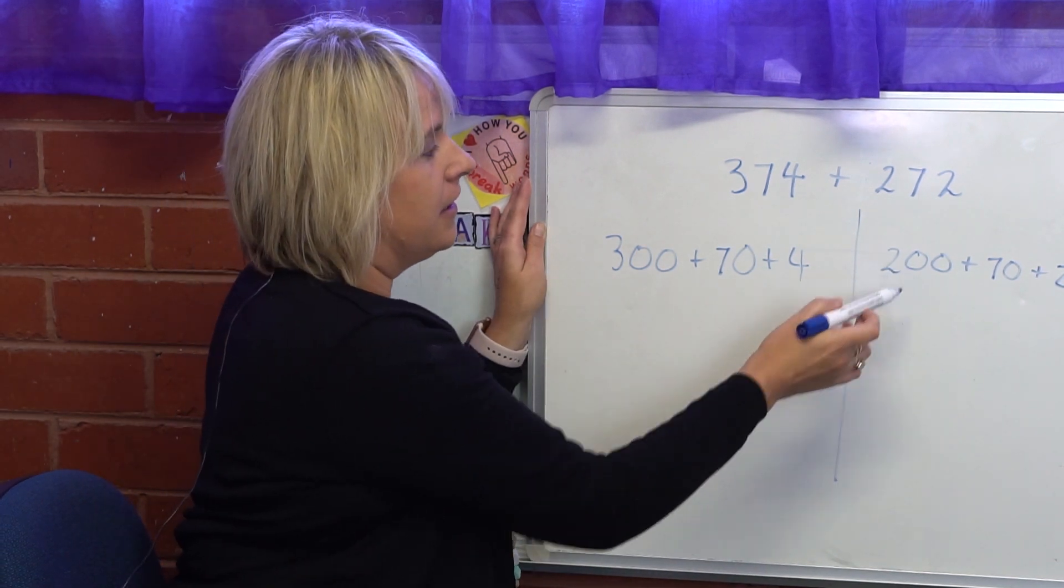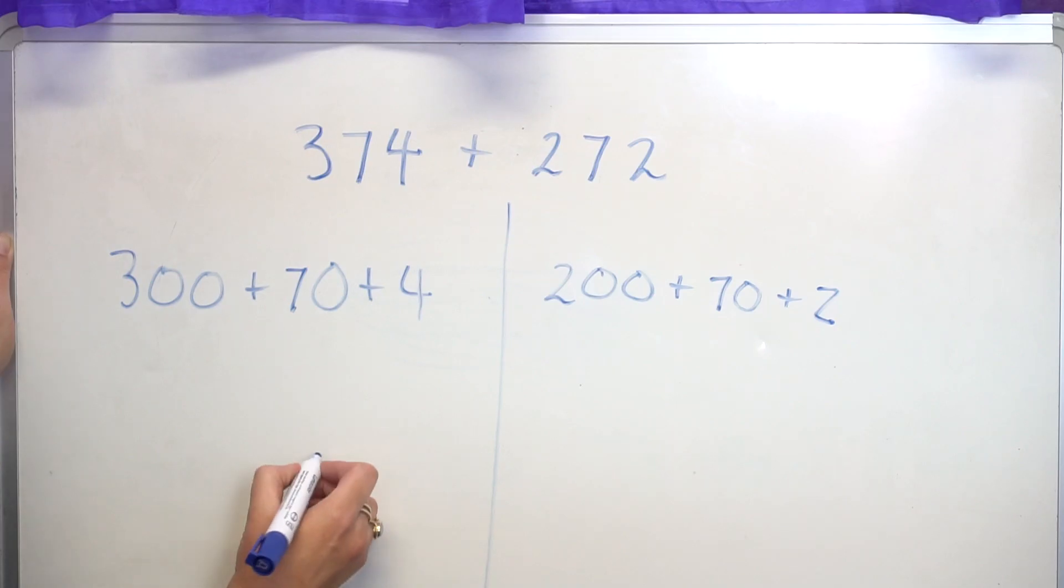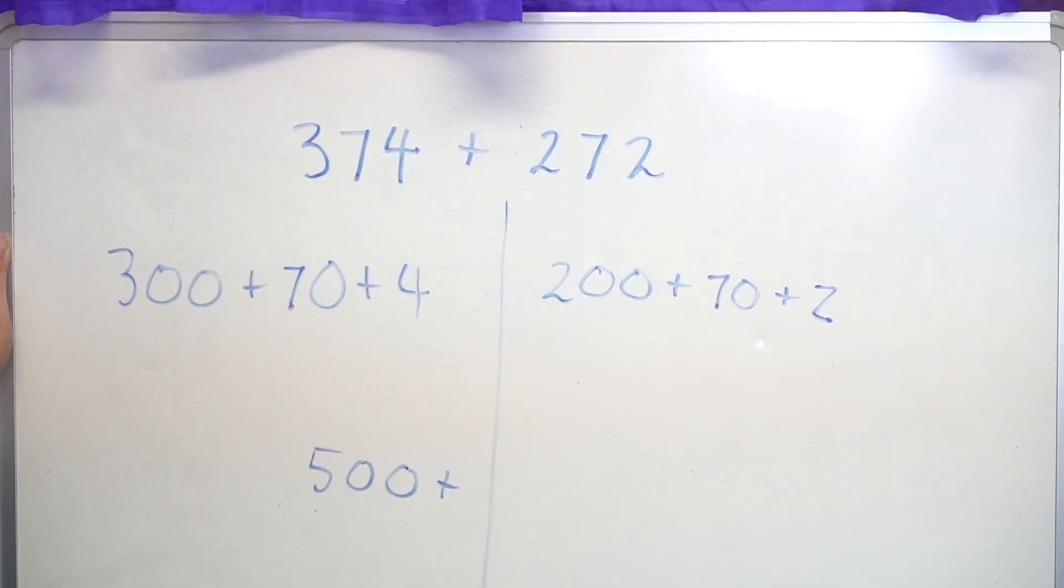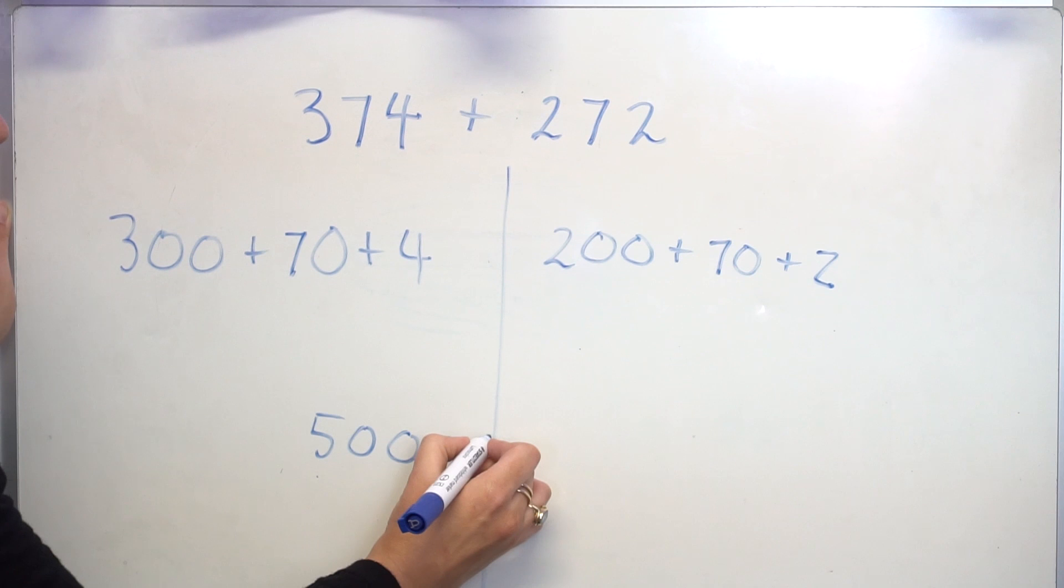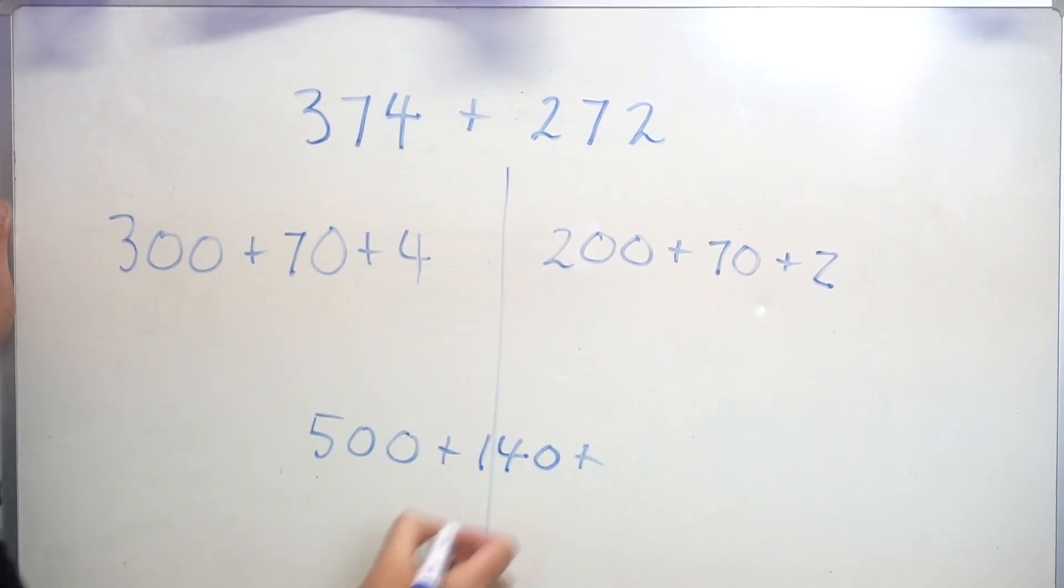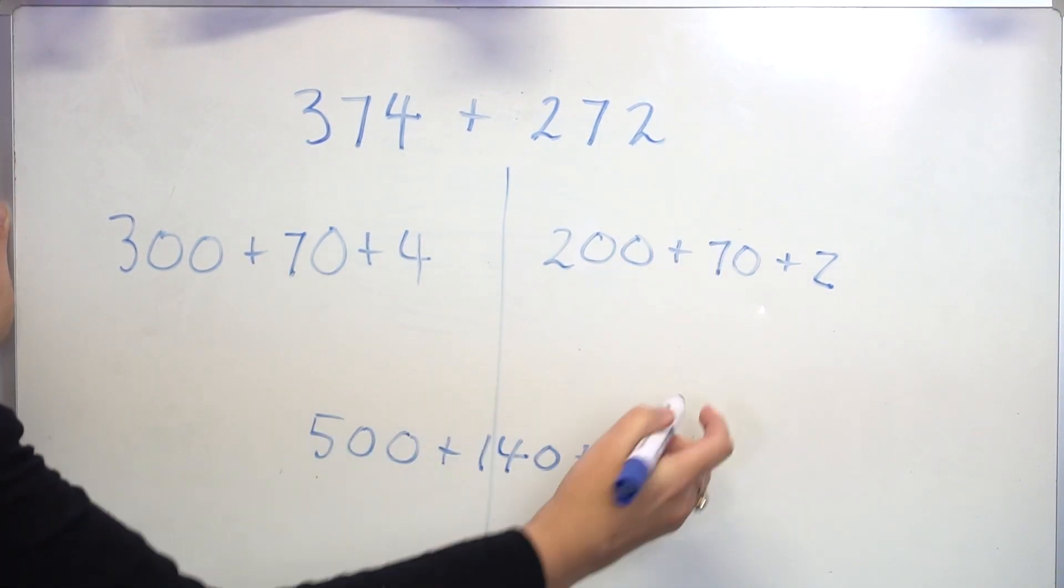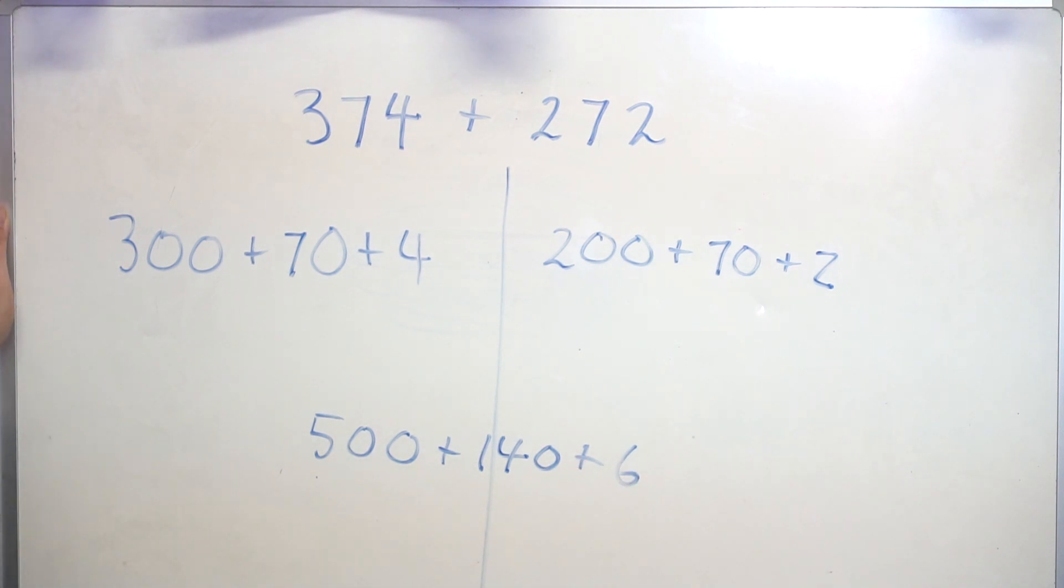So here I can add my 300 and 200 which would equal 500. I can add my 70 and 70 using my doubles facts which equals 140, and I can add my 4 and 2 which equals 6.